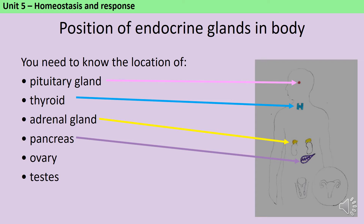On top of your kidneys sit your adrenal glands, quite high in your abdomen. Your pancreas is a small, slightly leaf-shaped organ that sits just underneath your stomach in the digestive system. Depending on your biological sex, you then either have ovaries or testes.